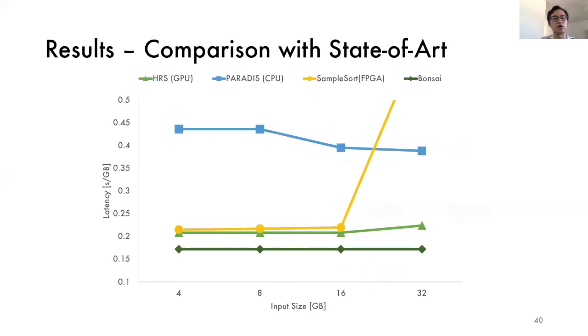We also compare our optimized DRAM sorter with state of the art CPU, GPU, and FPGA sorters. As we can see, our sorter always has the best performance across the datasets with a size of 4 to 32 gigabytes.